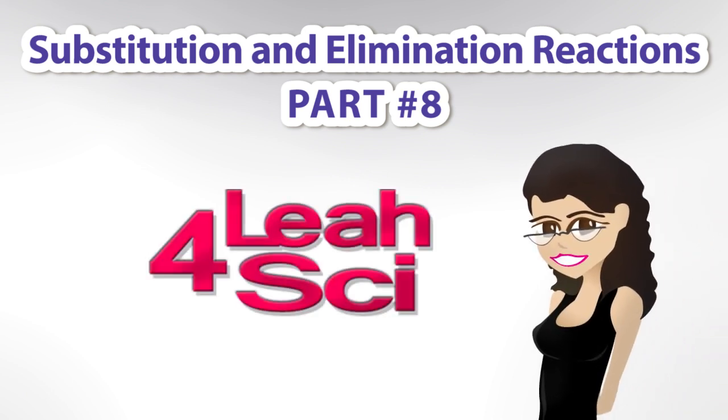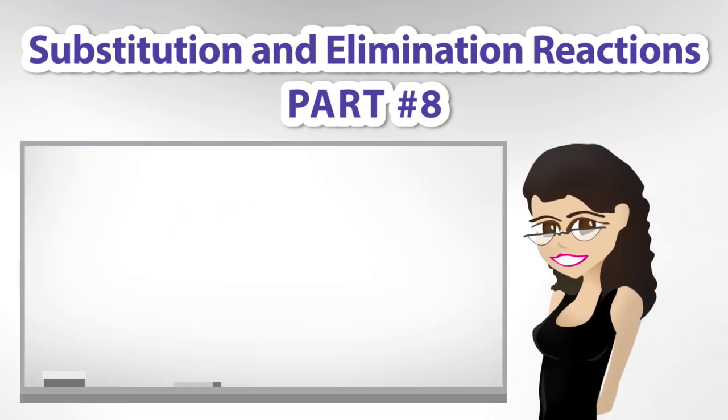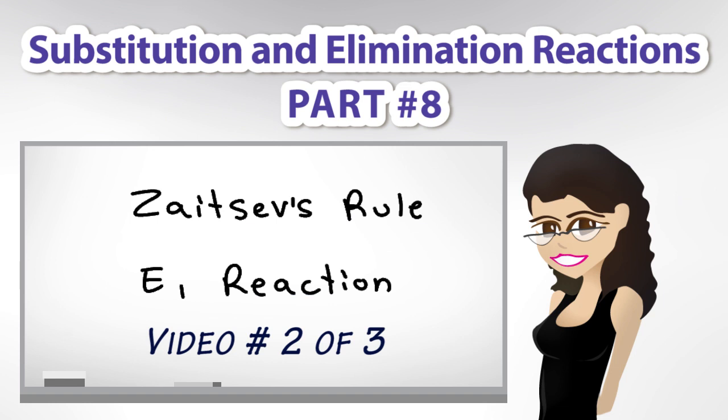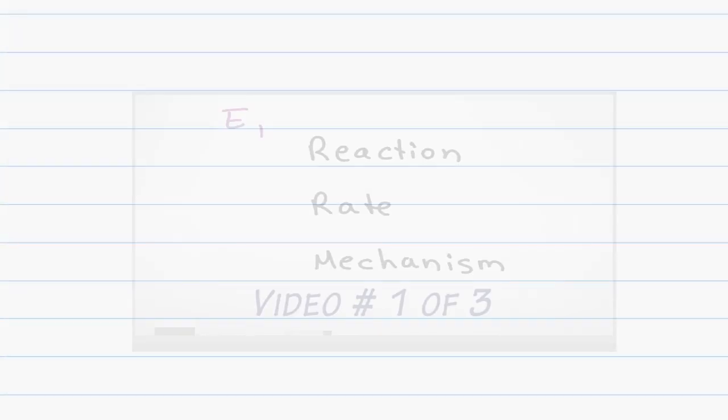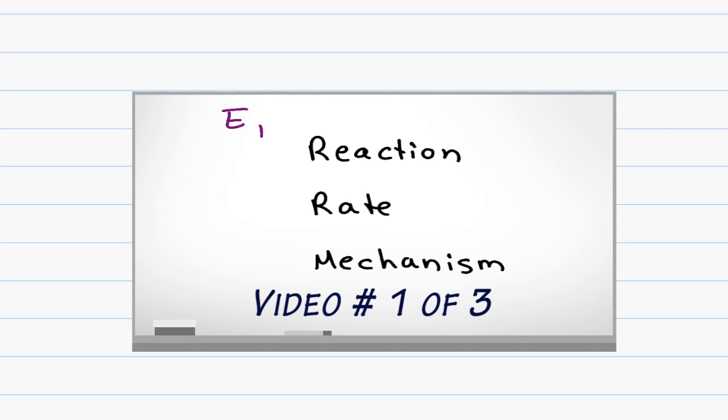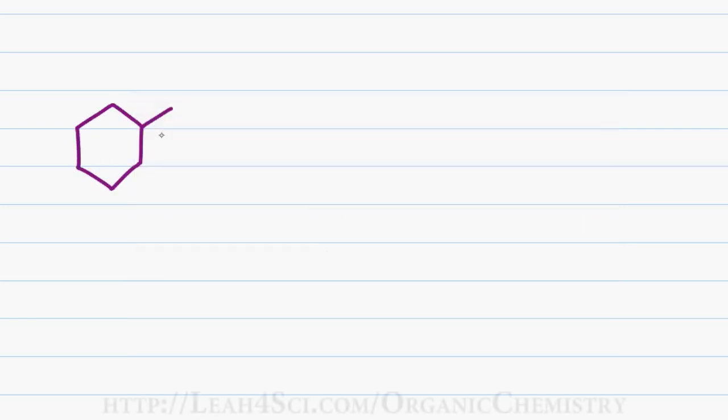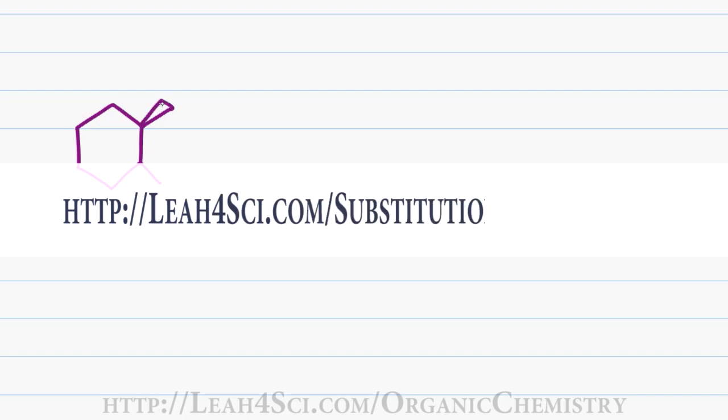Leah here from Leah4Sci.com. In this video, we'll continue the E1 reaction discussion by analyzing how Zaitsev's rule plays a part in choosing the correct products. If you missed the E1 part 1 video, click here for a brief review of the E1 reaction rate and mechanism. You can also find it on my website, Leah4Sci.com/substitution-elimination.